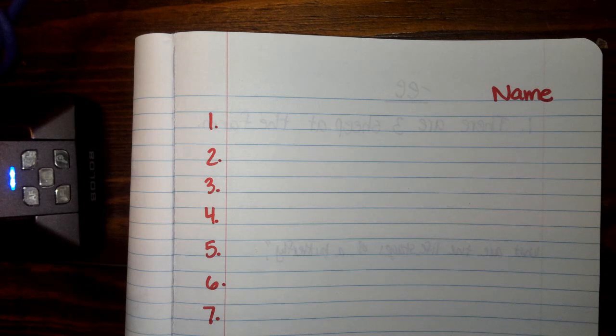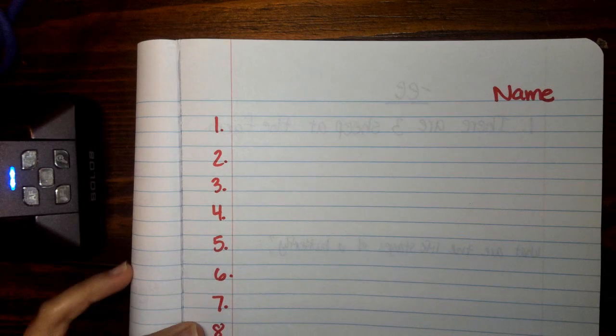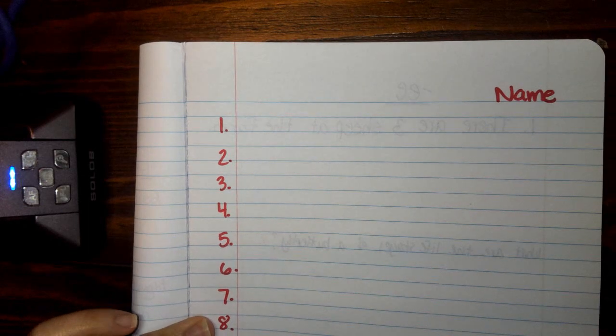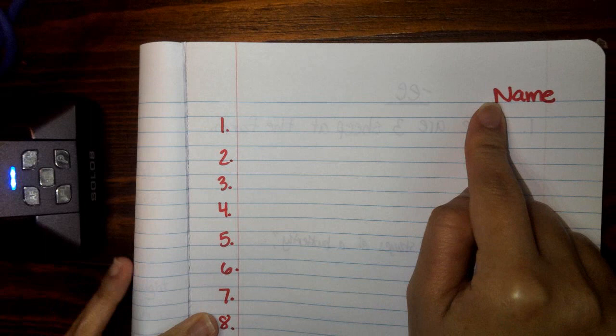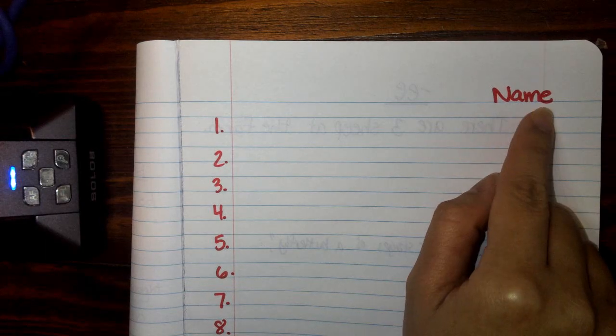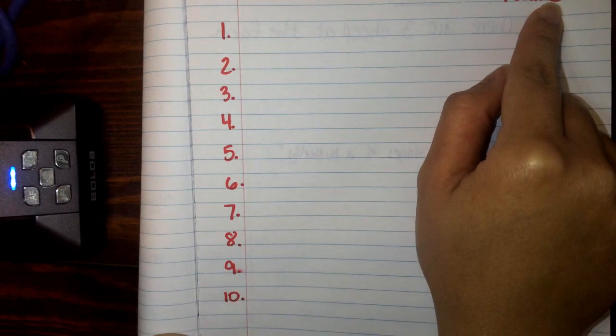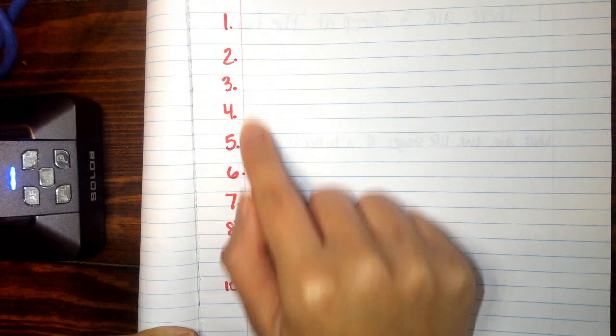We are going to take our spelling quiz today. Our spelling pattern is the EE spelling pattern. On your sheet of paper, you need to write your name, and then you're going to number 1 through 10.